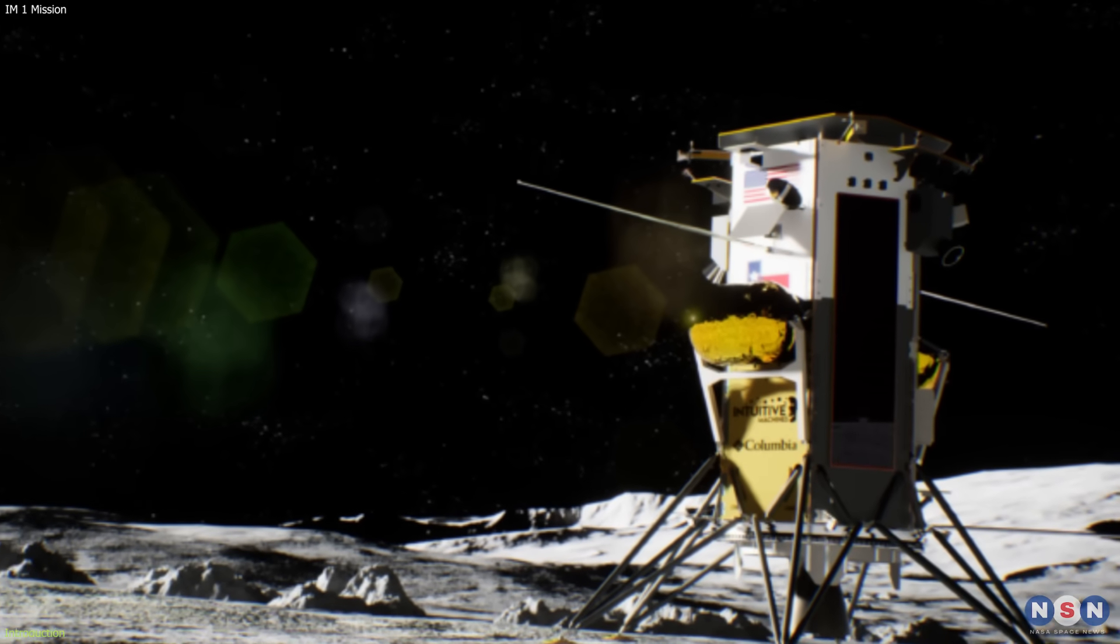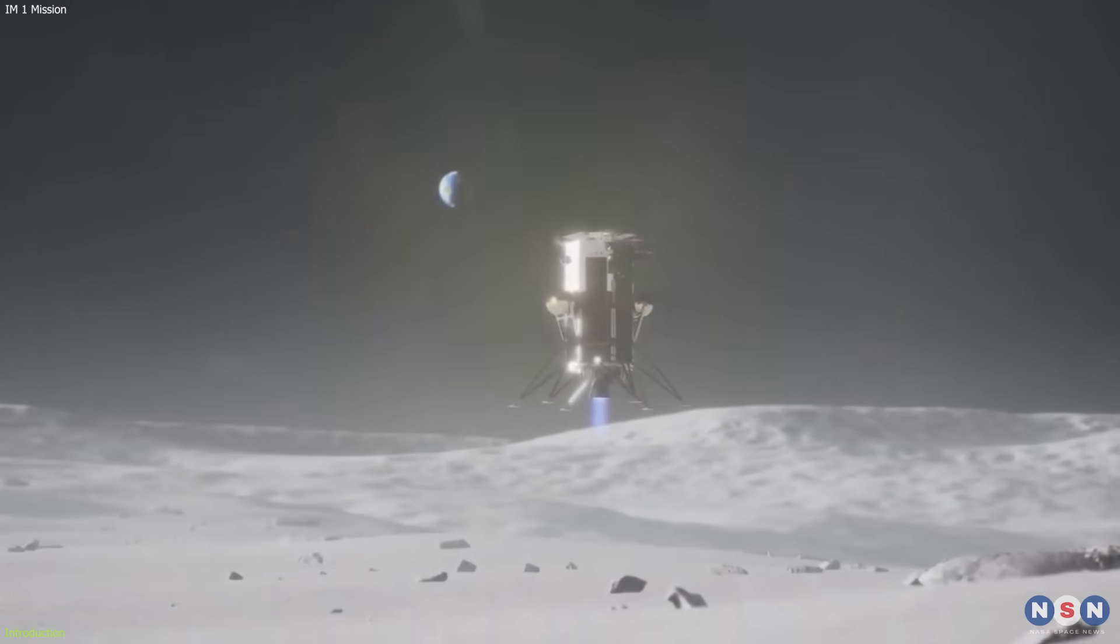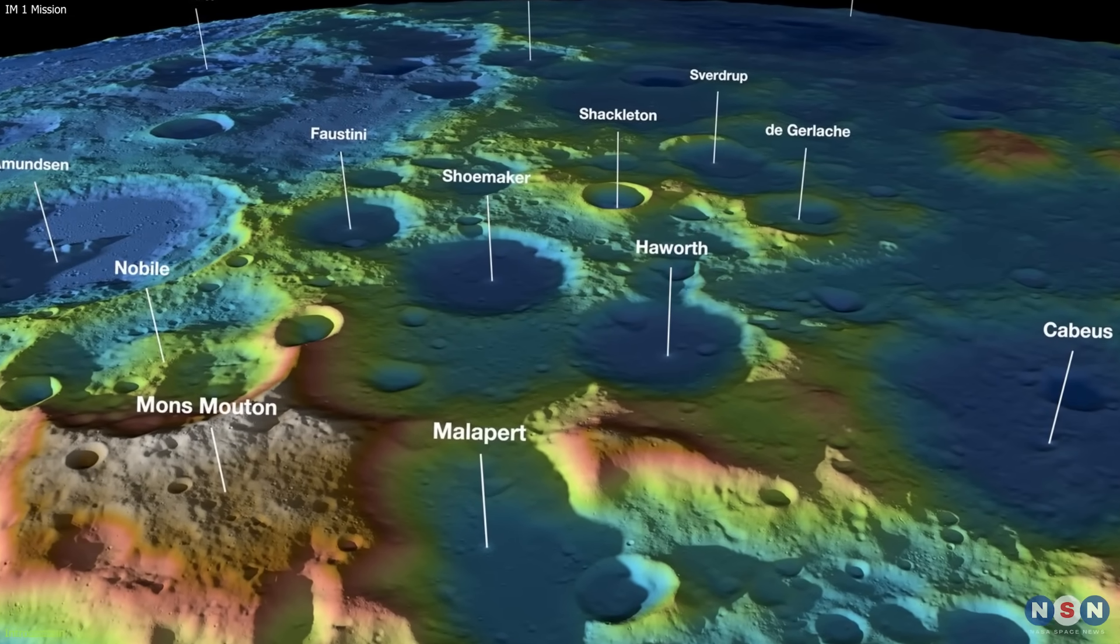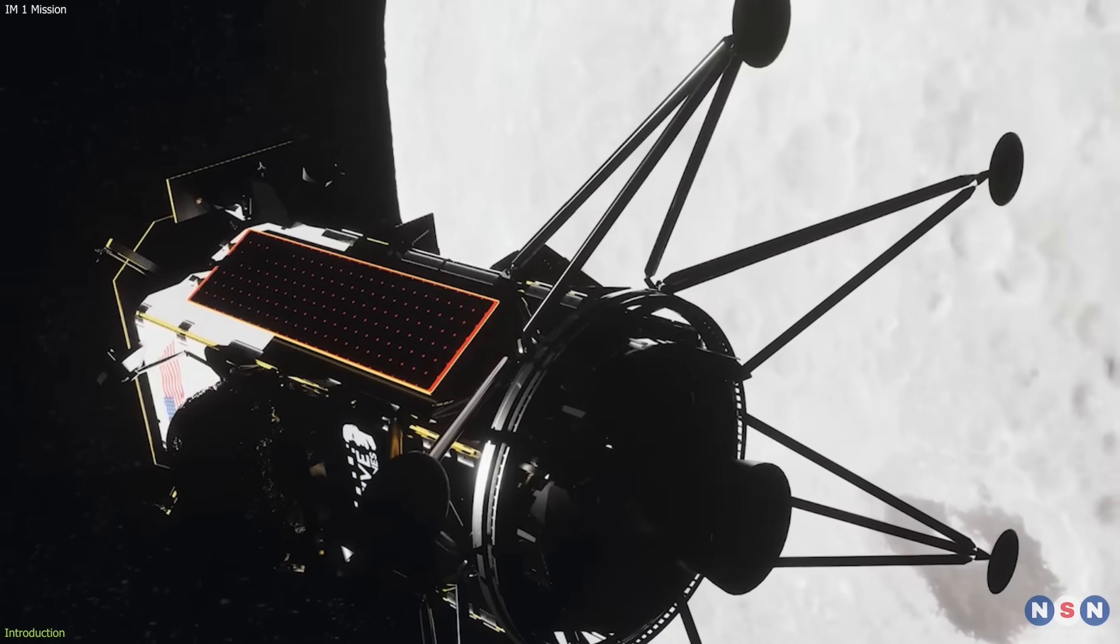The lander, named Odysseus, will touch down on the lunar surface on February 22, 2024, at Crater Malapert A, near the South Pole of the Moon. Why is this mission so important? And what can we learn from it?